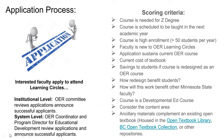At the system level, we look at whether a course is needed for a Z degree, since we're really promoting Z degrees across Minnesota State. We check if the course is scheduled to be taught in the next academic year, if it has high enrollment — which we consider greater than 50 students per year — whether the faculty is new to OER learning circles, the current cost of textbooks, student savings if the course is redesigned as an OER course, and how the redesign will benefit students and other Minnesota State faculty.